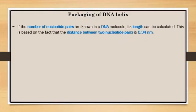If the number of nucleotide pairs are known in a DNA molecule, its length can be calculated. This is based on the fact that the distance between two nucleotide pairs is 0.34 nanometer. DNA is a polynucleotide molecule. For 10 nucleotide pairs, the length is 10 into 0.34 nanometer.